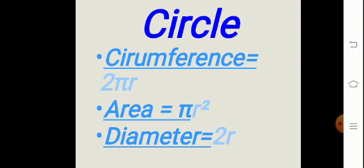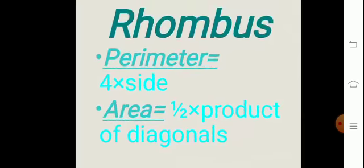Diameter is the longest chord of the circle. Rhombus. A rhombus is also a four-sided figure. For the perimeter of a rhombus, since all sides are equal, the formula is 4 into side. The area of a rhombus is equal to half into the product of its diagonals. A diagonal is a line segment that joins two opposite vertices.